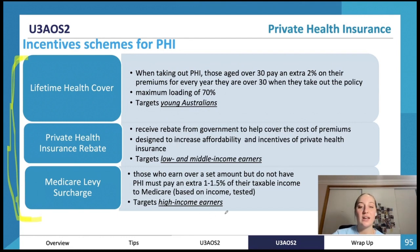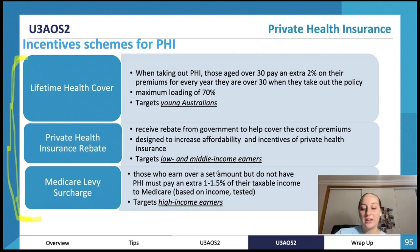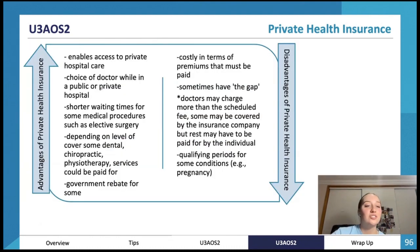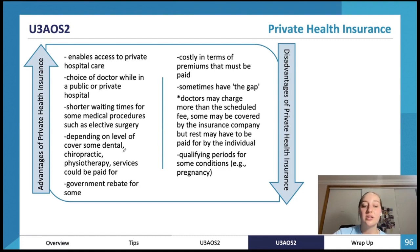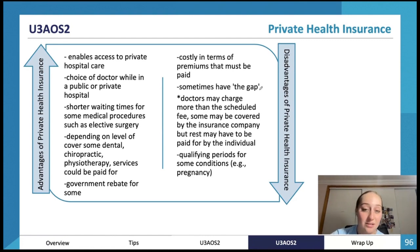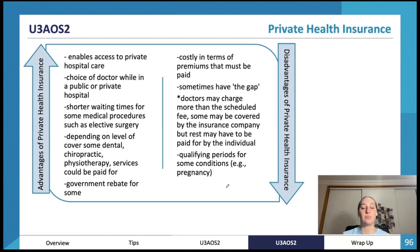It's also about equity — higher income earners are charged more towards Medicare, while those who earn less pay less. Advantages of private health insurance: access to private hospital care, choice of doctor in hospital, shorter waiting times, and coverage for dental, chiropractic, and physio depending on the level of cover. There's also a government rebate. Disadvantages: premiums must be paid on top of tax and Medicare. There are sometimes gap payments even with private health insurance, and qualifying periods apply for some conditions.